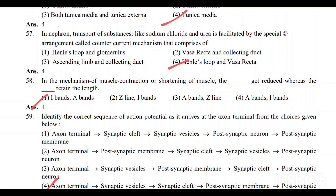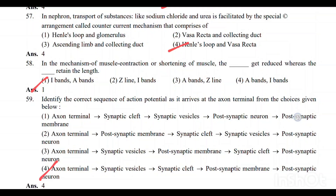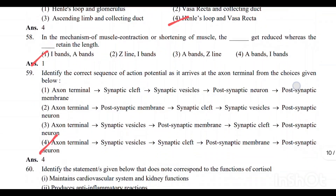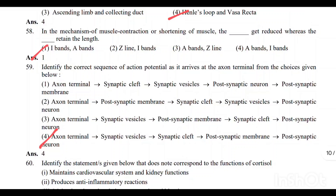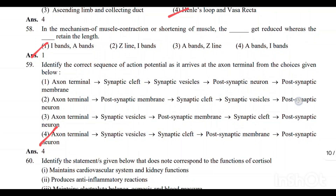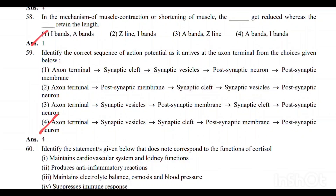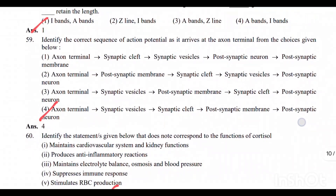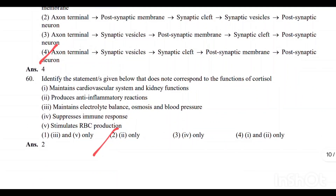Question number 57: Option 4 is the correct answer. Question number 58: Option 1 is the correct answer — I band and A band. Question number 59: Identify the correct sequence. Option 2 is the correct answer.